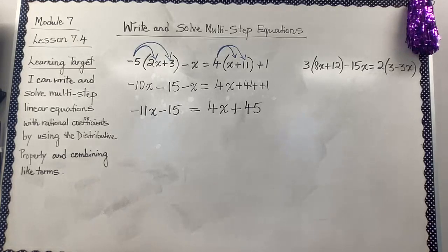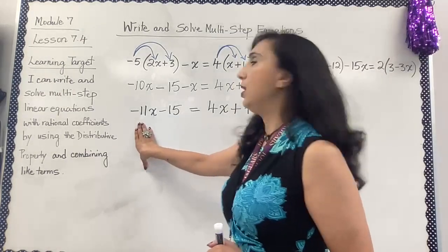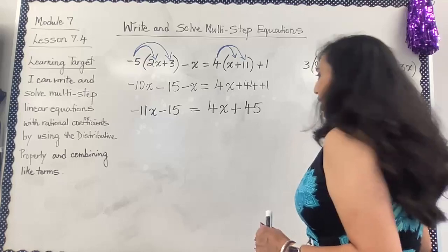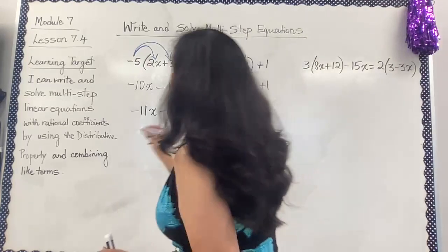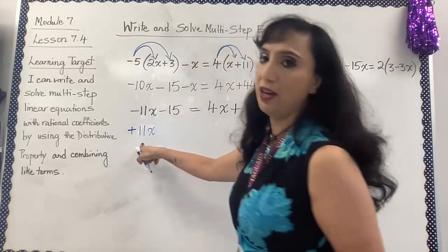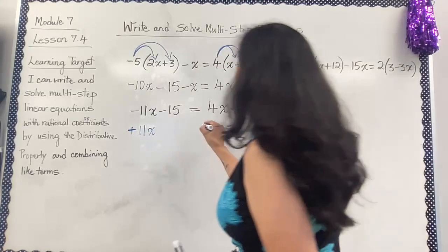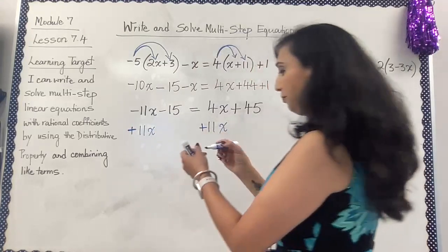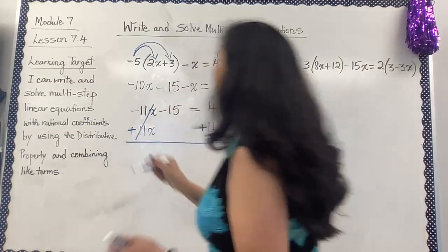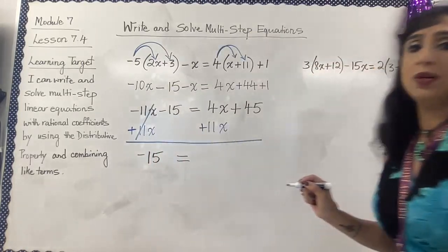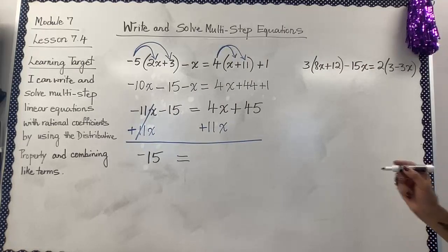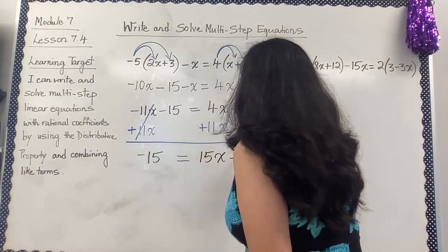Now I'm going to use the addition property of equality because I am trying to remove the negative in front of the variable. I'm going to add 11x to both sides of the equation. 11x minus 11x gives zero, so I'm left with negative 15 equals 4 plus 11, which gives me 15x plus 45.